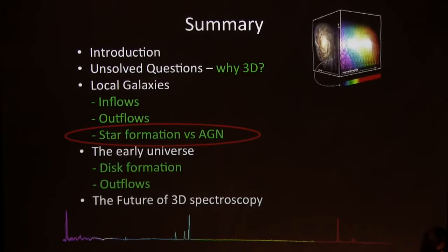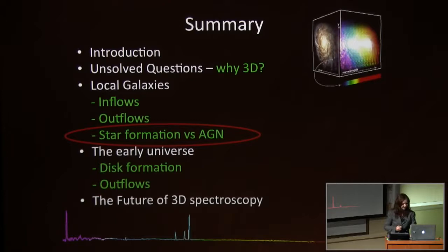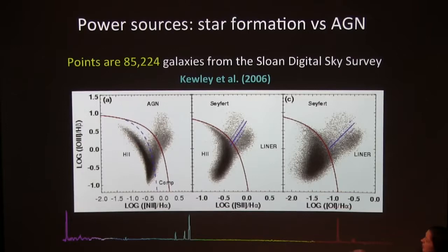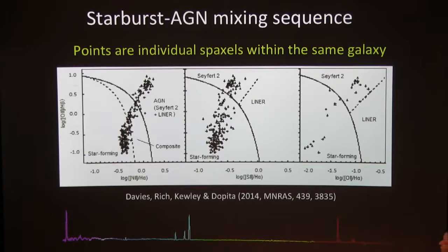The other thing we've been doing with integral field data is to separate star formation from AGN. When I did my thesis, the aim was to do star formation versus AGN in luminous infrared galaxies, but with a single spectrum per galaxy you actually can't discriminate. A single slit or single fiber is not enough. Now we can do much better. The standard optical diagnostic diagram shows 85,000 galaxies from Sloan with the star-forming sequence and the AGN sequence. Looking at the same sequence in just one galaxy from our spectrograph, we've got mixing between starburst and AGN — these are spatial pixels in one galaxy.